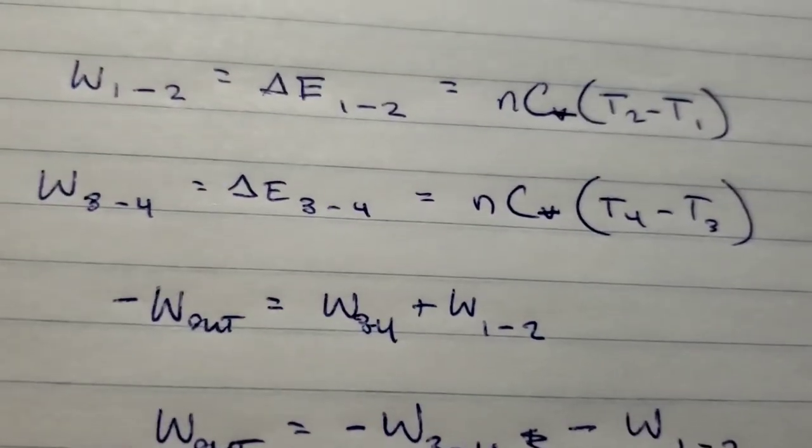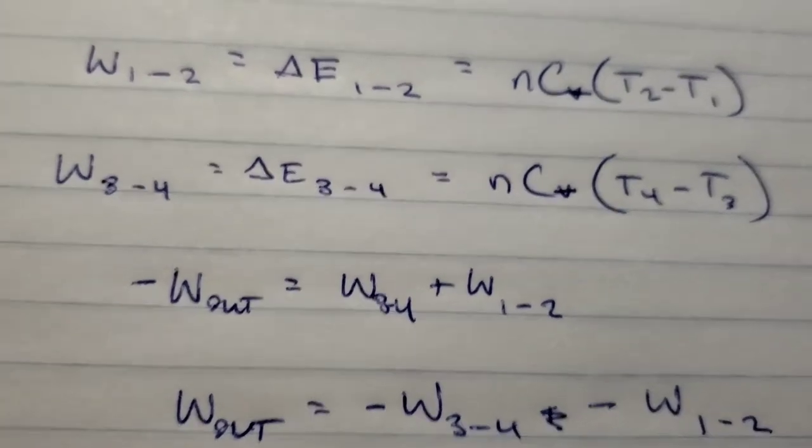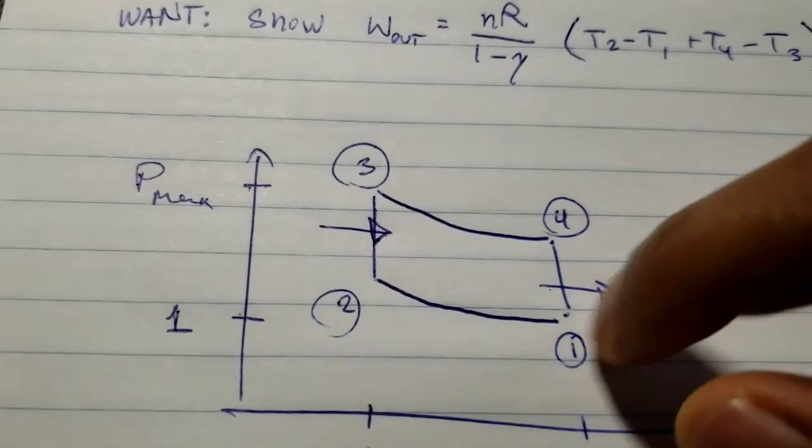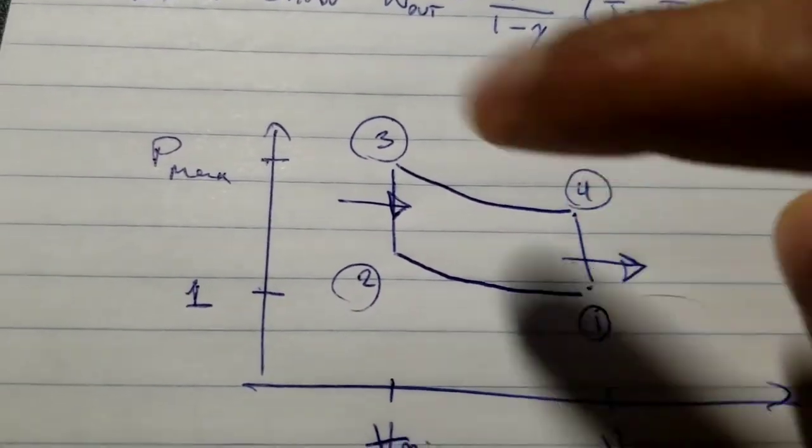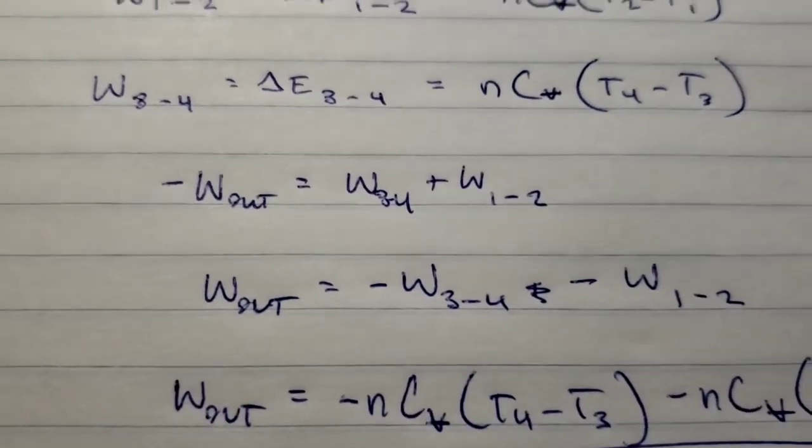Work out is going to equal both of these combined. Total work is just all of these segments added up, and we know these don't have any work done because they're vertical lines, or they're isochord processes.